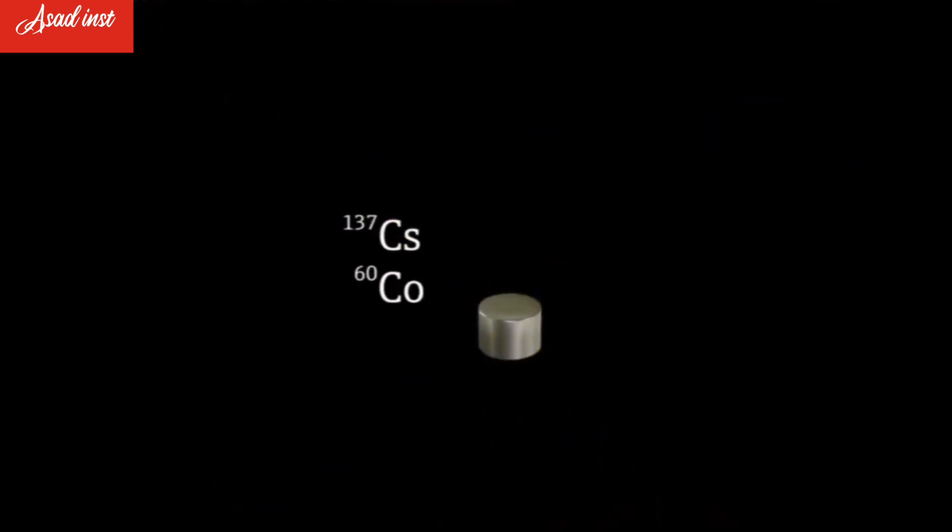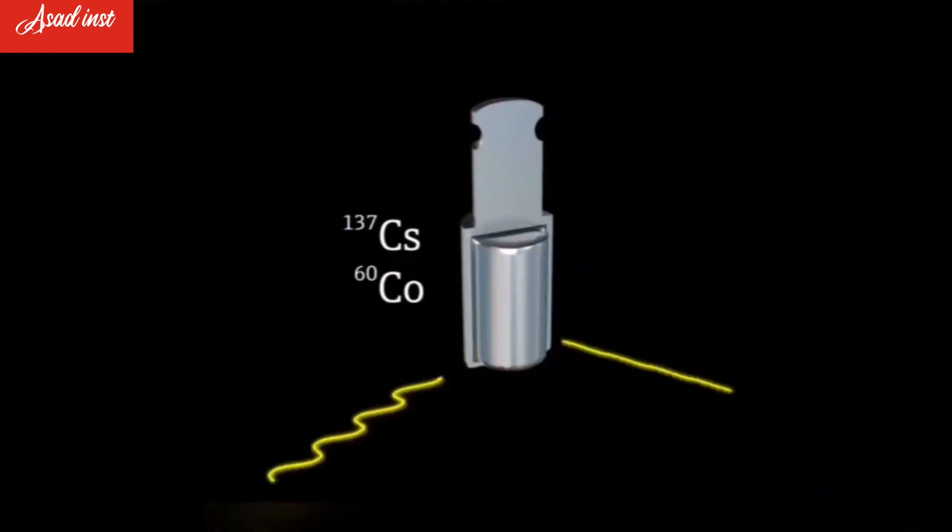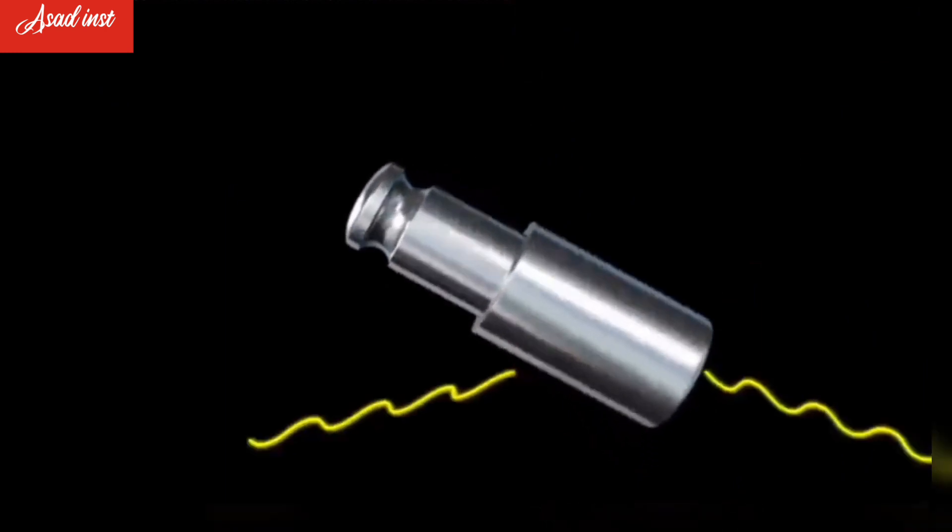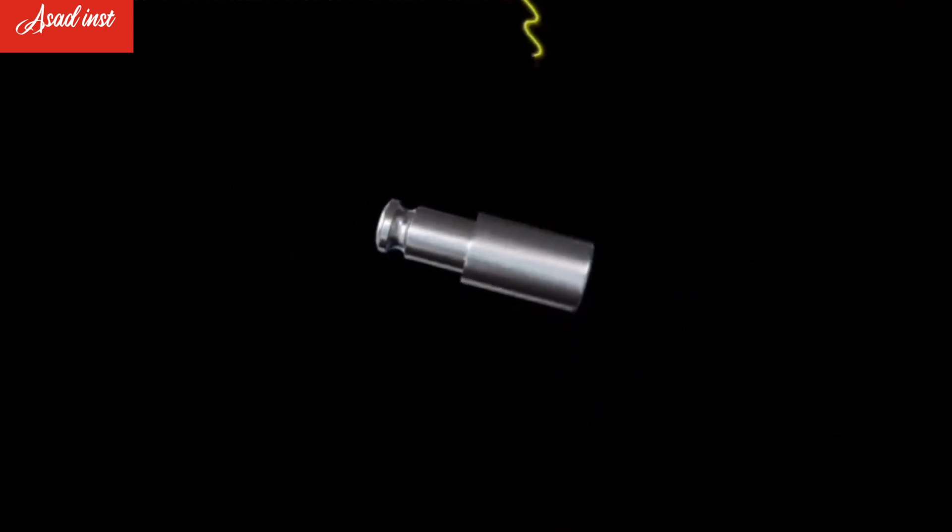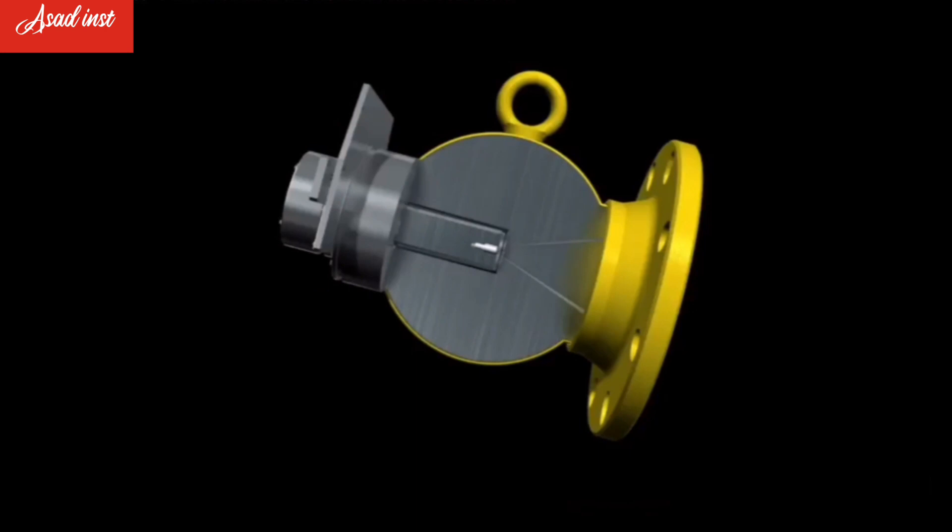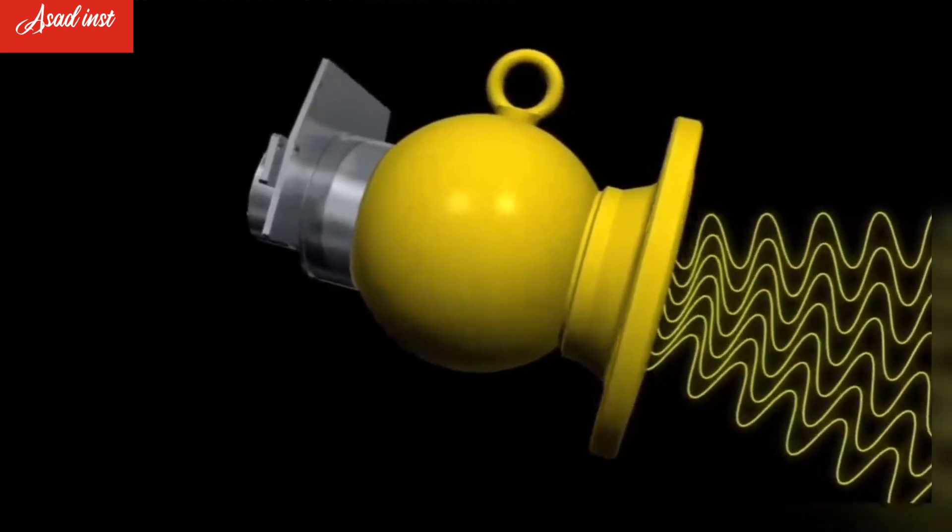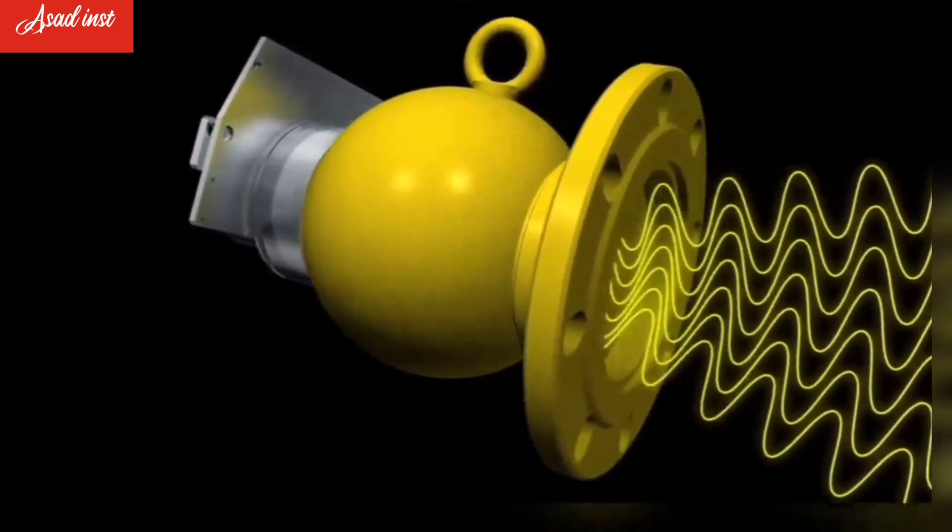The isotope is installed in a double-walled stainless steel capsule which shields the beta radiation completely. In industrial instrumentation, thus only gamma radiation is used. The radioactive radiation source is shielded by the source container in such a way that the gamma radiation can only be emitted in a certain direction.